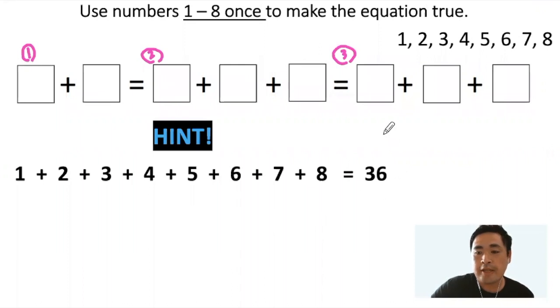Because we separated them out into three groups, we can also then say that group one added to group two added to group three also equals 36.